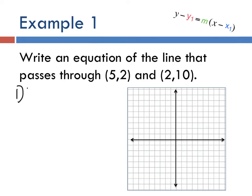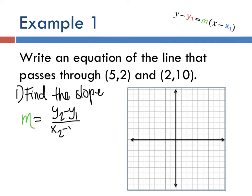First step, find the slope. How can we find the slope? Use the slope formula: y2 minus y1 over x2 minus x1. Remember it doesn't matter which one you pick, so I'm going to say this is x1, this is y1, this is x2 and this is y2. Just plug those in.